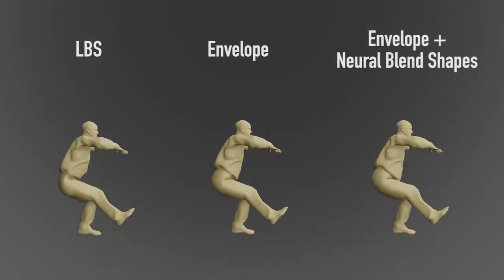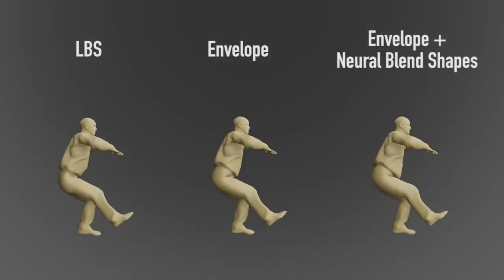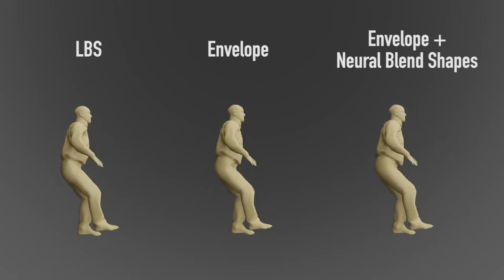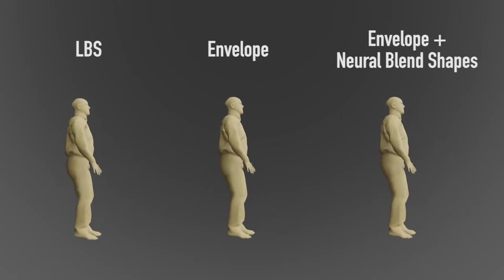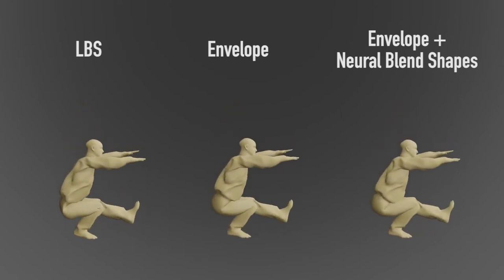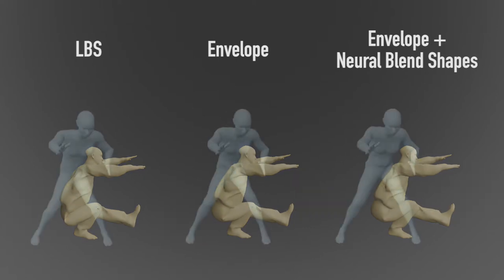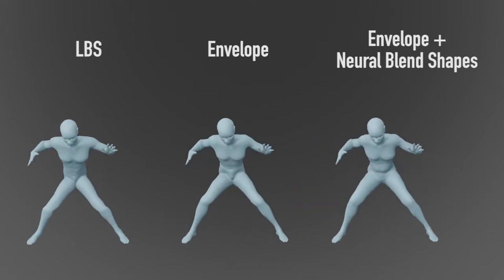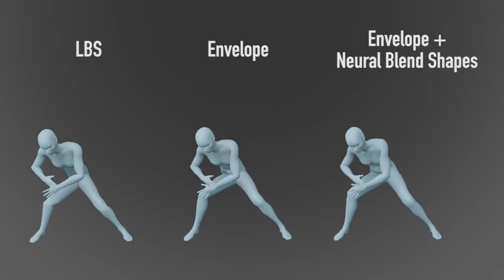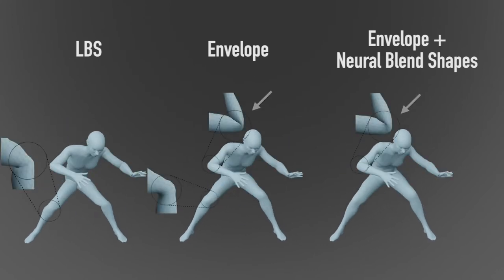Our results demonstrate that our framework can successfully extract rigging and skinning for different characters not seen during training, and predicts pose-dependent deformations. Our envelope deformation outperforms baseline LBS techniques, since it was trained on data with high-quality deformations. Our neural blend shapes further refine the quality of the deformation in a pose-dependent manner.